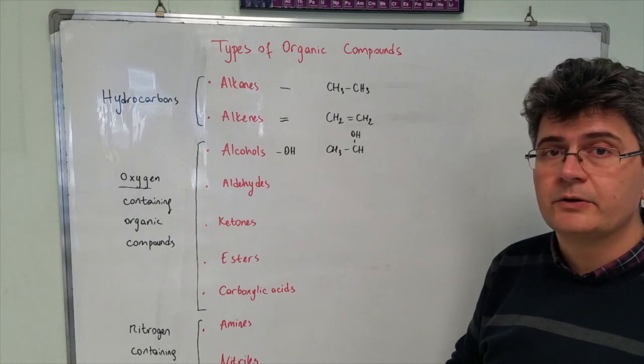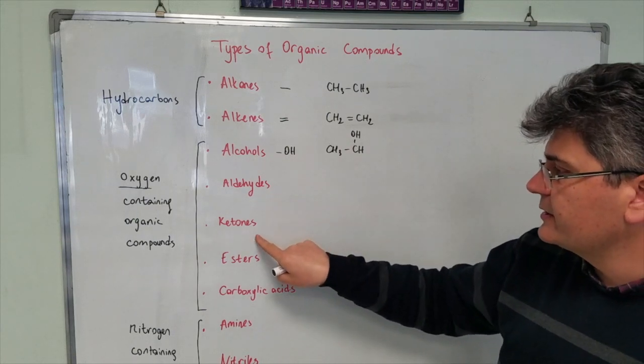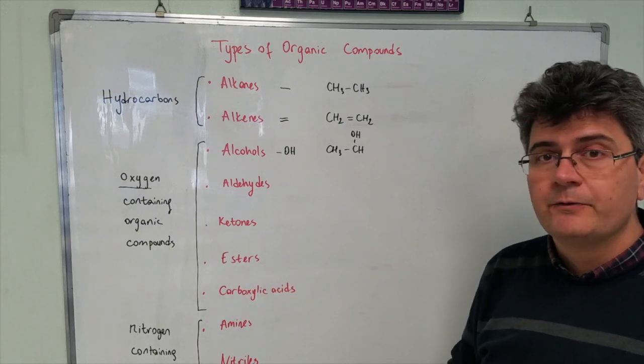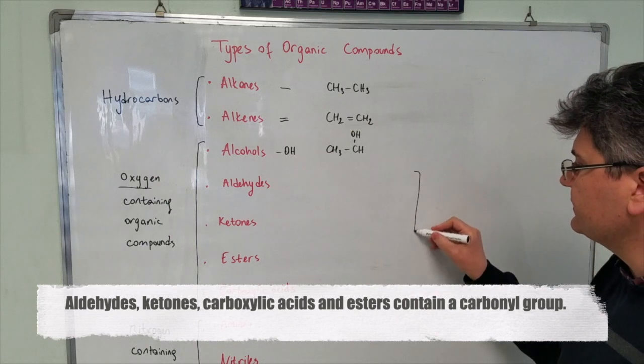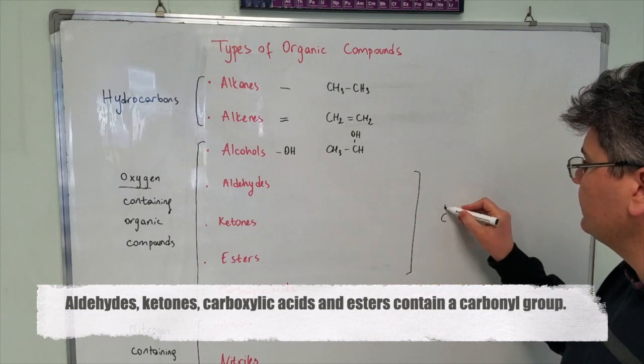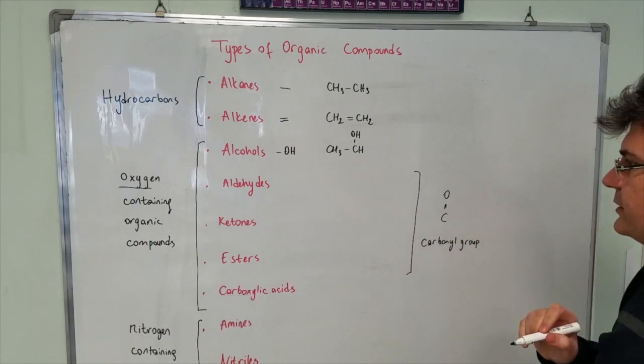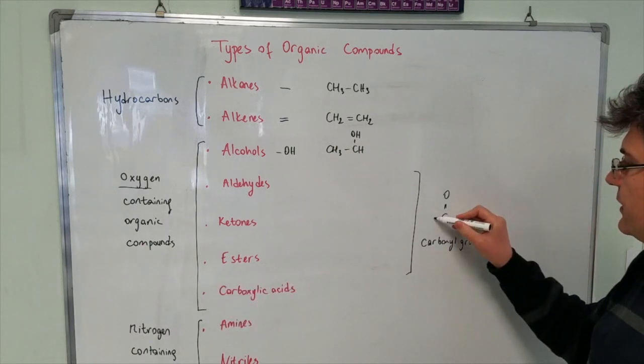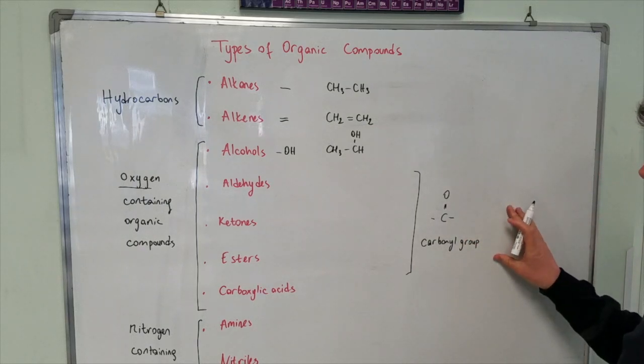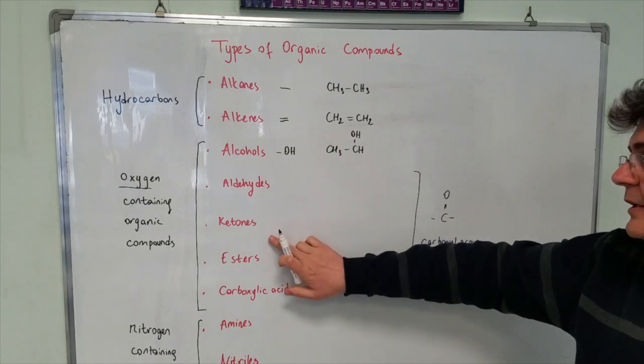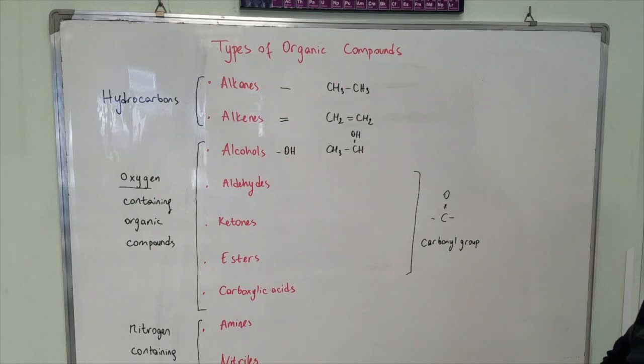In the next four families, aldehydes, ketones, esters and carboxylic acids, we do have a common thing. That common thing is something that we call carbonyl group. Carbonyl group is a carbon atom with a double bonded oxygen. Depending on what you have on the left and on the right hand side of this carbon atom, this compound is going to be either an aldehyde or a ketone or an ester or a carboxylic acid.